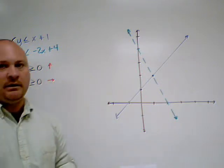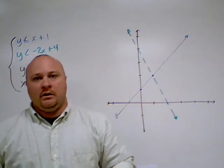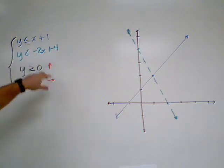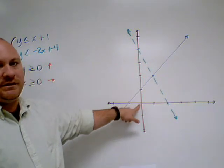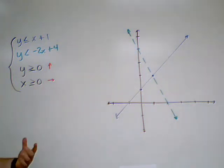Now, which way do I shade? That's another tricky part when it comes to linear programming. What you have to do is pick a test point. For both of these, you'll notice that the origin, zero, zero, is not on either line. So if I use that point, it's very easy to plug in.